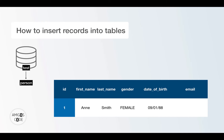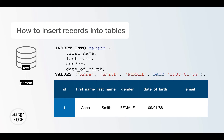So to create this person in our table, we have to write the following command: INSERT INTO and then the actual table name. Then we have to specify the columns that we want to insert — in this case, first name, last name, gender, and date of birth. Remember, this person does not have an email, so we don't have to specify the email column.